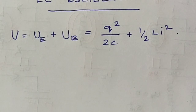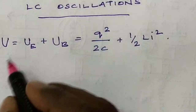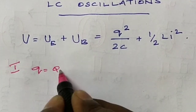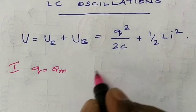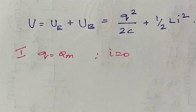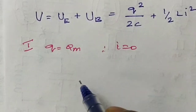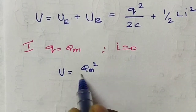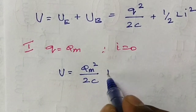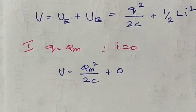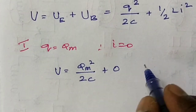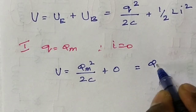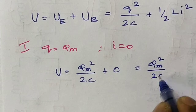First case: the charge in the capacitor is maximum. At that time, the current in the inductor is zero. So the total energy epsilon equals Q_M squared by 2C, plus zero for the magnetic energy, since there is no current. Therefore the total energy is wholly electrical: Q_M squared by 2C.